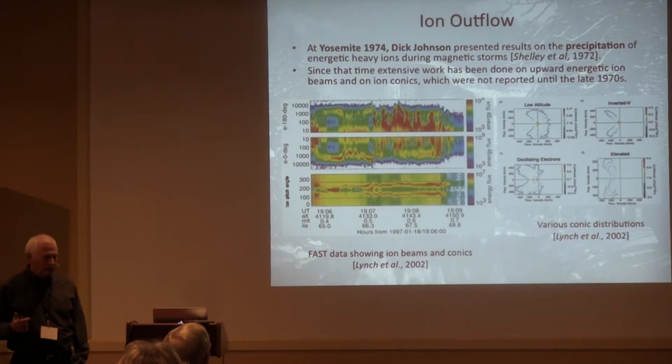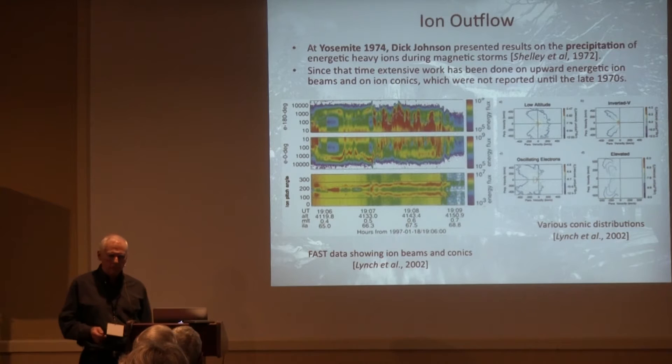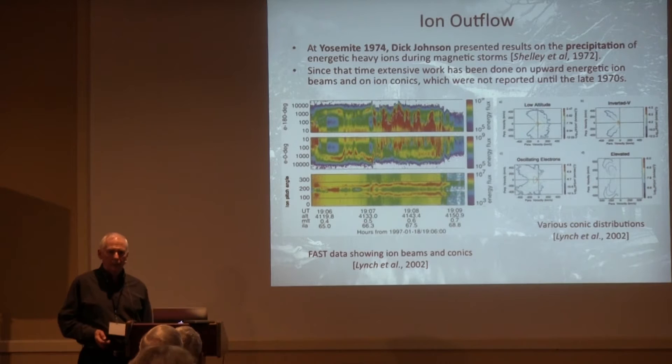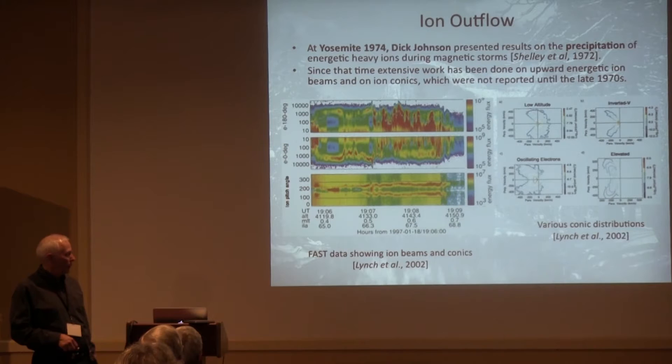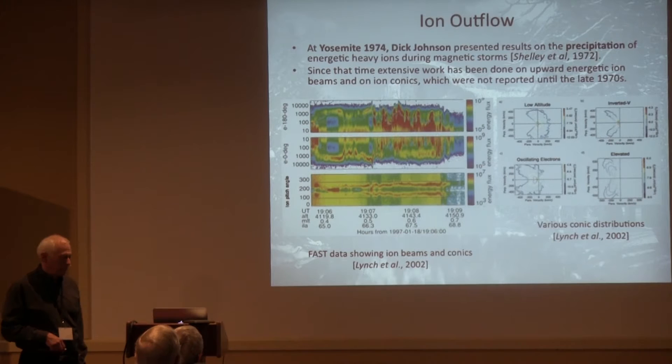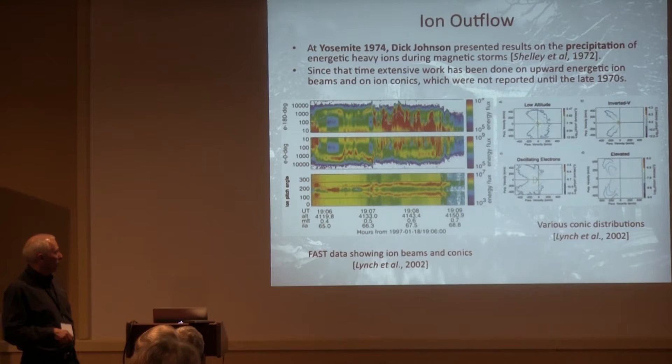Now ion outflow — as I mentioned earlier, we had Dick Johnson. There's going to be a video talking about the precipitating O-plus ions during magnetic storms. This was first presented at the Spring AGU Sheraton Park in 1972 — one of those things you'll never forget. I walked into the session; the guy was talking about precipitating keV O-plus ions, and it went against everything I'd ever been taught. Dick came to the meeting and talked about it. We still hadn't measured outflow, but Andy Yow, Dave Klumpar, Harry Collin, Ed Shelley, and others discovered ion outflow — both beams and conics — in the late '70s.